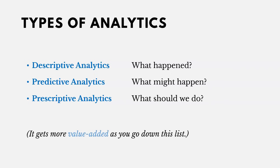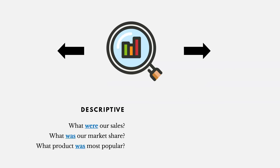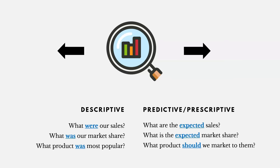Here are some examples of each type. For descriptive — looking at the past — we might ask: what were our sales, what was our market share, and what product was most popular? That's still an important part of analytics. Then for predictive and prescriptive — a future look — we ask: what are the expected sales, what is the expected market share, and what product should we market to our customers? It's all forward-looking.